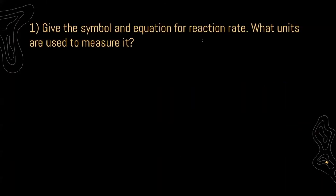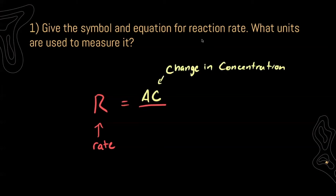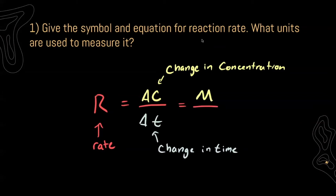For one, it says give the symbol and equation for reaction rate. What units are used to measure it? Looking at our equation, we start off with R. R stands for our rate, and our rate is equal to a ratio: our change in concentration (delta) over our change in time, delta T. For units, since we're dealing with concentration we always use molarity — M for molar — and for time it depends on what you're working with, sometimes minutes, sometimes seconds. Always make sure your rate corresponds to the time you are using.